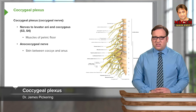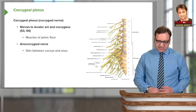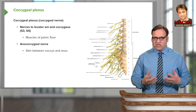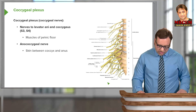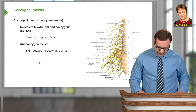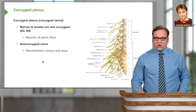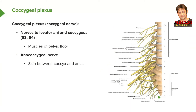Briefly, the coccygeal plexus is essentially just the coccygeal nerve, which gives rise to the nerve to levator ani and nerve to coccygeus, coming from S3 and S4, supplying the muscles of the pelvic floor. There is also the anococcygeal nerve from the only coccygeal segment, which goes on to supply the skin between the coccyx and the anus. So the coccygeal plexus contains the one coccygeal spinal cord segment and the two superior segments S4 and S5.